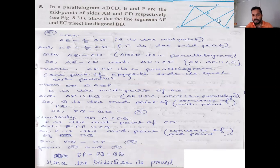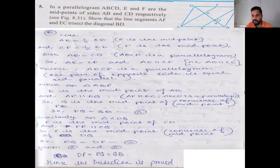In triangle APB, E is the midpoint and EQ is parallel to AP (since AF is parallel to EC). By the converse of the midpoint theorem, Q bisects PB, so PQ equals BQ. This is result one.